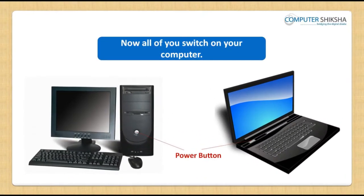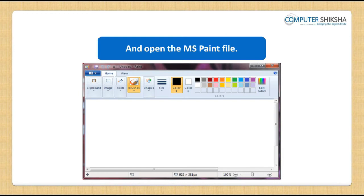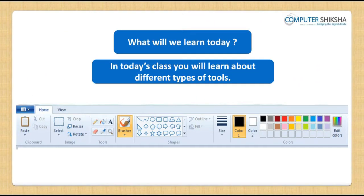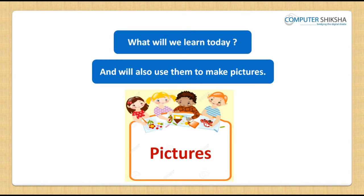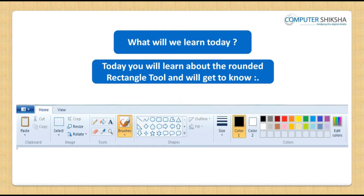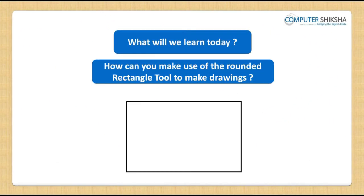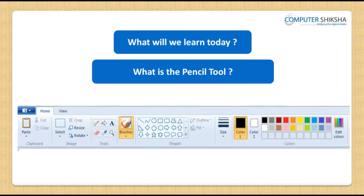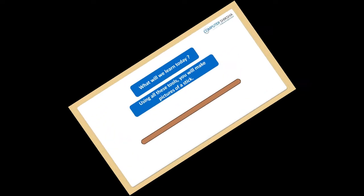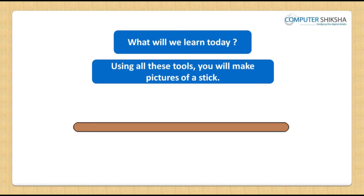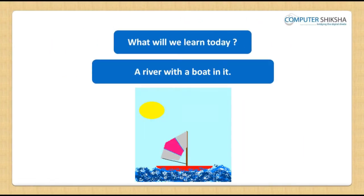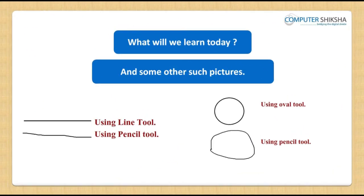Now all of you switch on your computers and open the MS Paint file. In today's class, you will learn about different types of tools and will also use them to make pictures. You will learn about the Rounded Rectangle Tool, what it is, how to use it, what is the Pencil Tool, and what is the Airbrush Tool. Using all these tools, you will make pictures of a Stick, a Mobile Phone, a River with a Boat in it, and some other pictures.